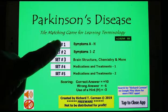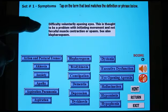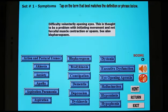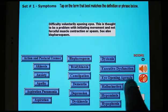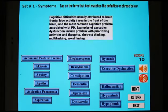Take a look at set number one — symptoms. It gives you a definition up here of a symptom; this one is something to do with having trouble opening your eyes. Here's 'eye opening apraxia' — that's probably it, and it is.